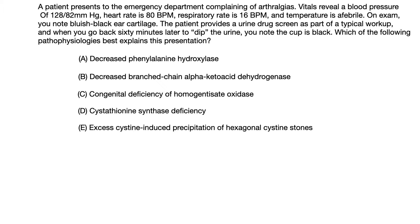Which of the following pathophysiologies best explains this presentation? A. Decreased phenylalanine hydroxylase. B. Decreased branched chain alpha-ketoacid dehydrogenase. C. Congenital deficiency of homogentisate oxidase. D. Cystathionine synthase deficiency. Or E. Excess cysteine-induced precipitation of hexagonal cysteine stones.